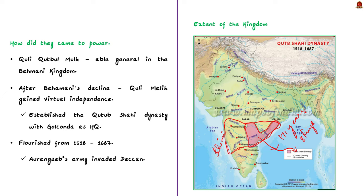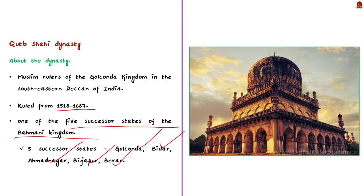The Qutb Shahi rulers were great builders and patrons of learning. They not only patronized Persian culture but also the regional culture of the Deccan. The Golconda Fort, Qutb Shahi tombs, and Charminar are proof of their splendid architecture. Now let us see some basics about Qutb Shahi architecture.